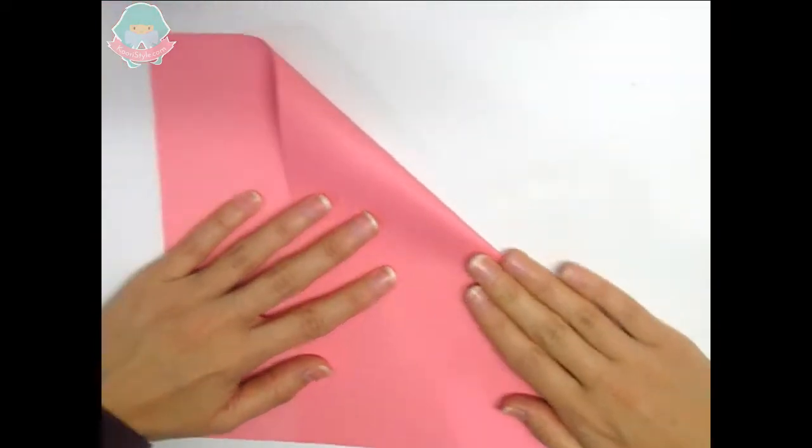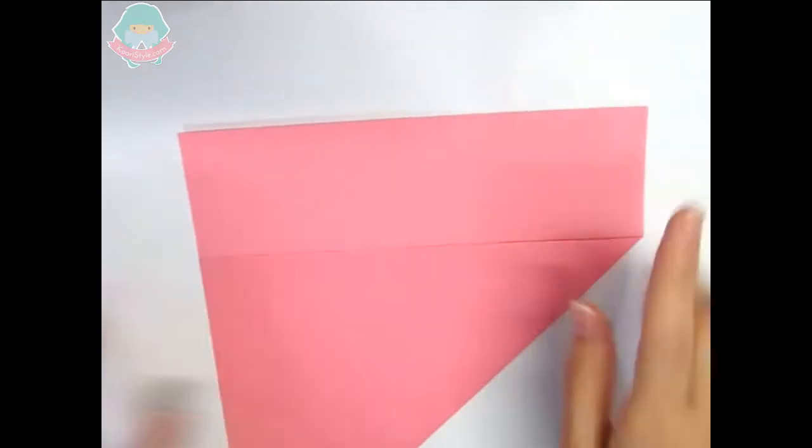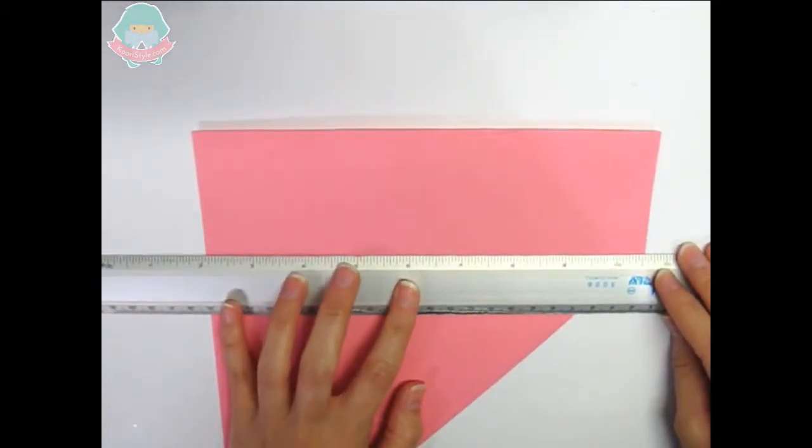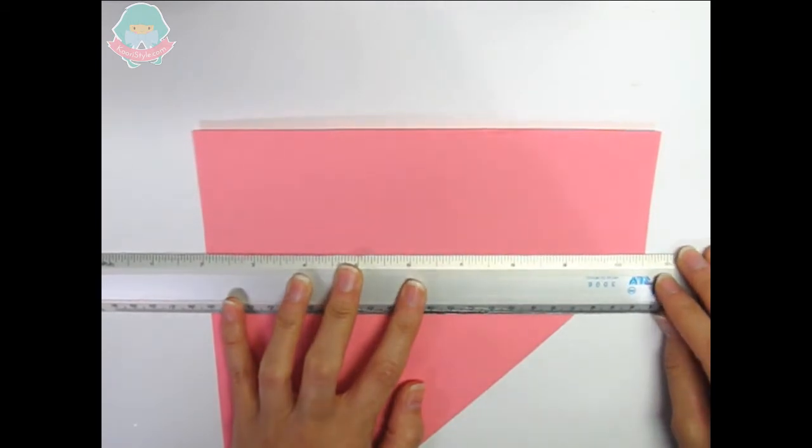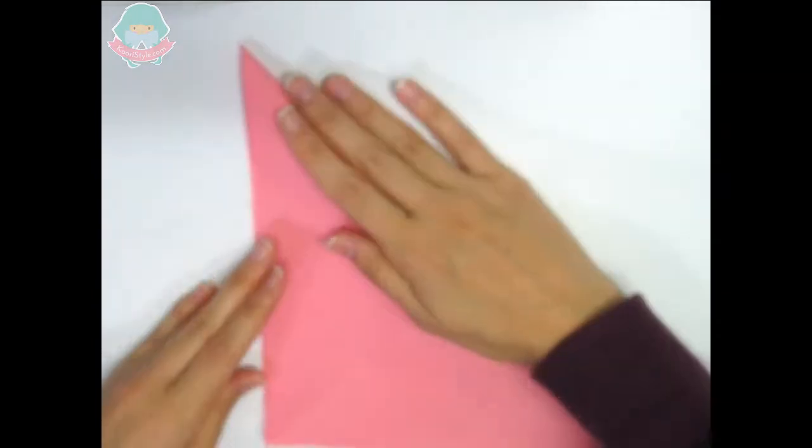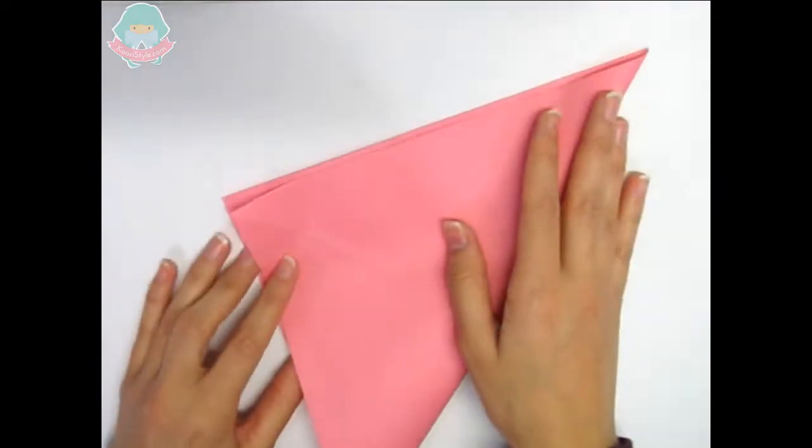Now we press and using a ruler or scissors we cut the extra paper. Now we have a square and we will fold it like this.